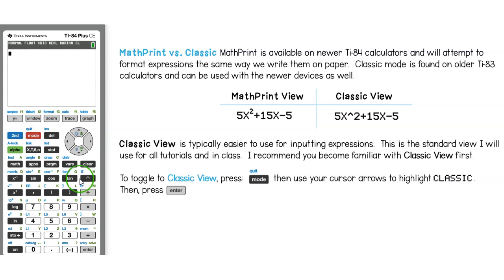Now I'll input the same expression using classic view. This will be 5x squared plus 15x minus 5. Notice this time, I don't see the superscript. Instead, to show that I'm using an exponent, I see the caret and the 2.